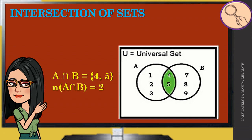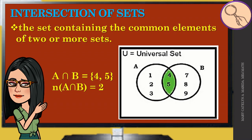So let us define intersection of sets: it is the set containing the common elements of two or more sets. Four and five are common between set A and set B, and it is denoted by this symbol. You got it — great!